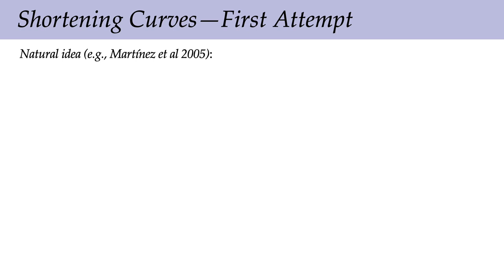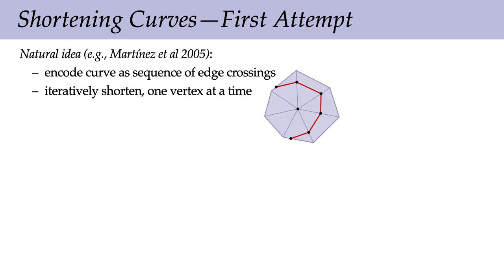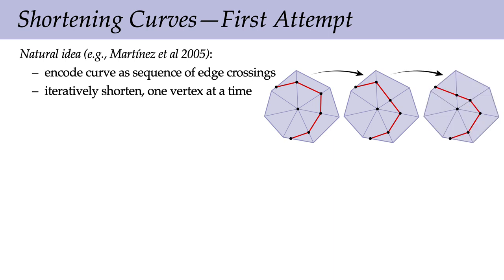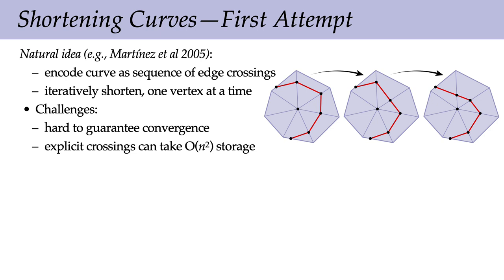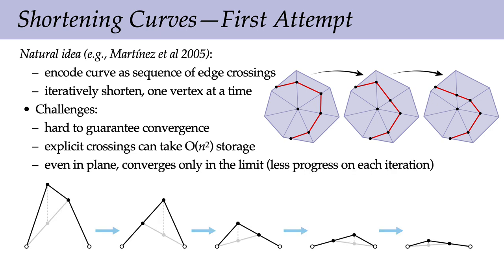In general, how can we shorten paths on polyhedral surfaces? A natural idea is to encode curves as polylines — store points along edges of the triangulation — and then iteratively shorten the curve one vertex at a time, until hopefully this thing straightens out. One challenge is that it can be tricky to guarantee this procedure always converges, basically due to some difficulty around vertices. Another is that explicitly storing all these crossings can take a lot of storage — if you want geodesics from one source vertex to all others, you might have order n-squared storage. And even in the plane, it basically takes forever to converge because at each iteration you're making less and less progress.